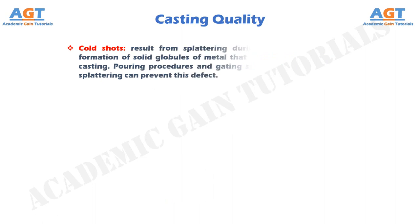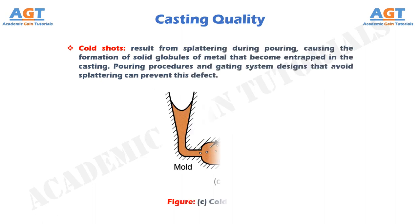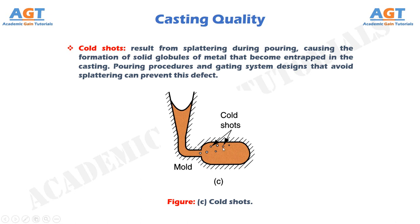Cold shots also result from splattering during pouring, causing the formation of solid globules of metal that become entrapped in the casting. Pouring procedures and gating system designs that avoid splattering can prevent this defect.